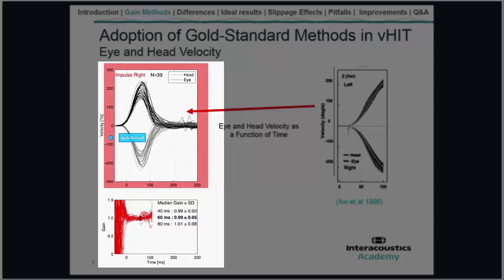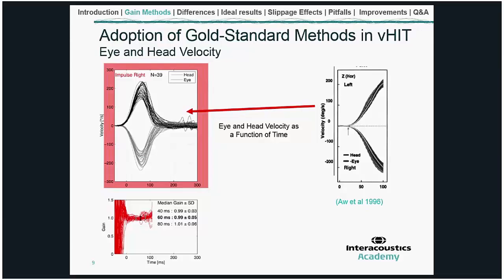One important aspect is that we try to enlarge the traces as much as the space on the report allows, giving a zoomed-in version of the velocity traces. This zoomed-in presentation helps more easily identify artifacts such as noise or slippage. With a smaller presentation of eye and head velocity traces, there is a tendency to hide artifacts, which we want to avoid.